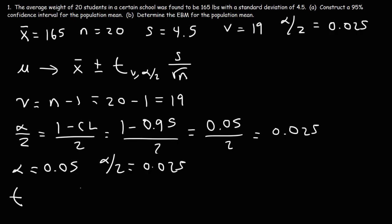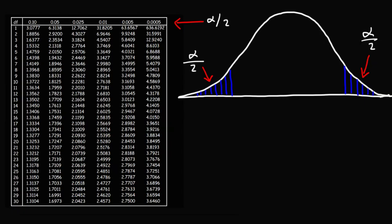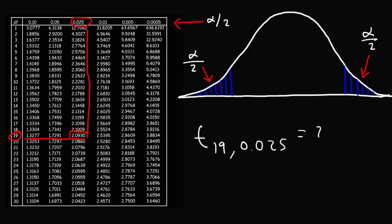Now we can determine our t value. We have 19 degrees of freedom and a one-tail alpha value of 0.025. We go to the student's t distribution table and find the value at the intersection of row 19 and column 0.025. That gives us 2.093. So our t value with 19 degrees of freedom and alpha over 2 equal to 0.025 is 2.093.